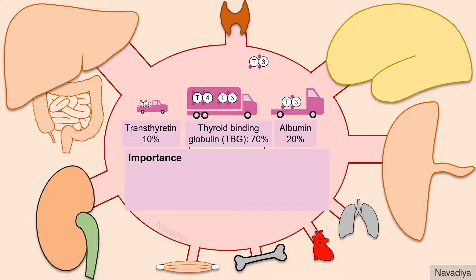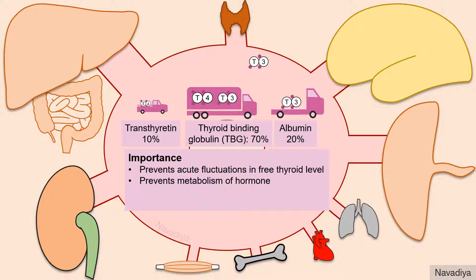This plasma protein binding serves two main purposes. First, it acts as a readily available reserve of thyroid hormones in blood and prevents acute fluctuations in free thyroid levels. Second, it prevents metabolism of these hormones and prolongs their half-life. This is clearly reflected in the half-life of these two hormones — T4 is more avidly bound so its half-life is longer than T3, at about 8 days, while the half-life of T3 is 1 day.